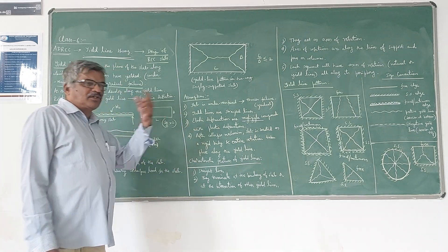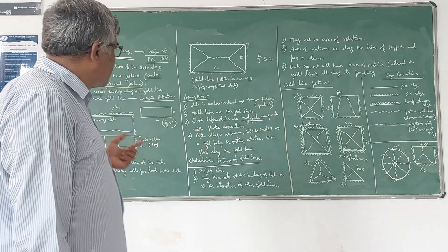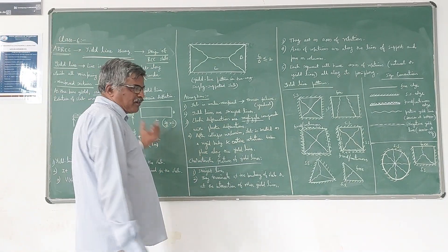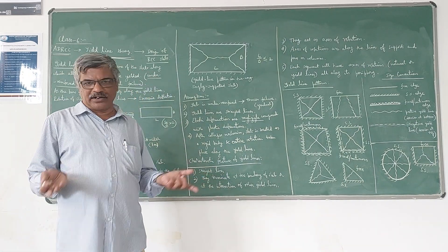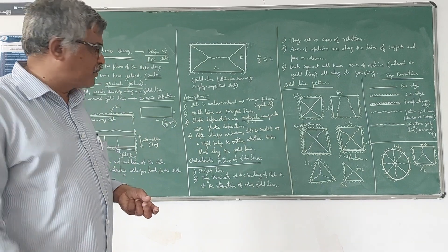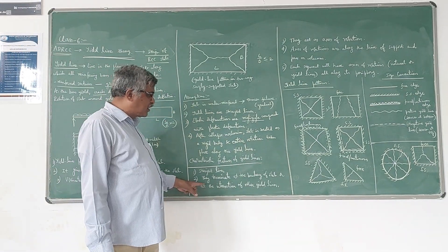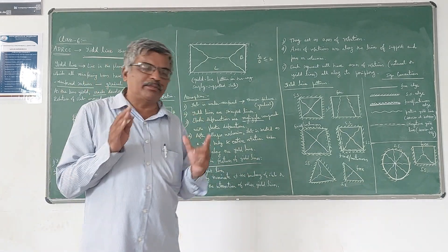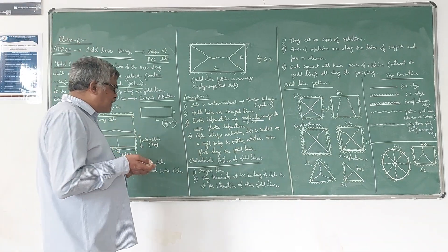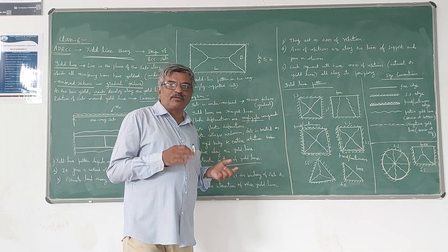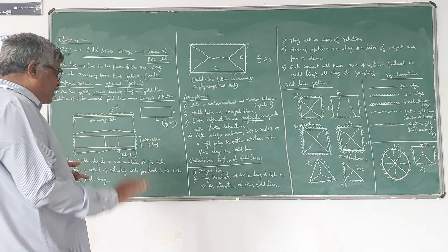Some characteristic features of yield lines are very important. First, yield lines are straight lines, not curved lines. Second, they terminate at the boundary of the slab or at the intersection of other yield lines — meaning yield lines end at boundaries or where they meet another yield line.